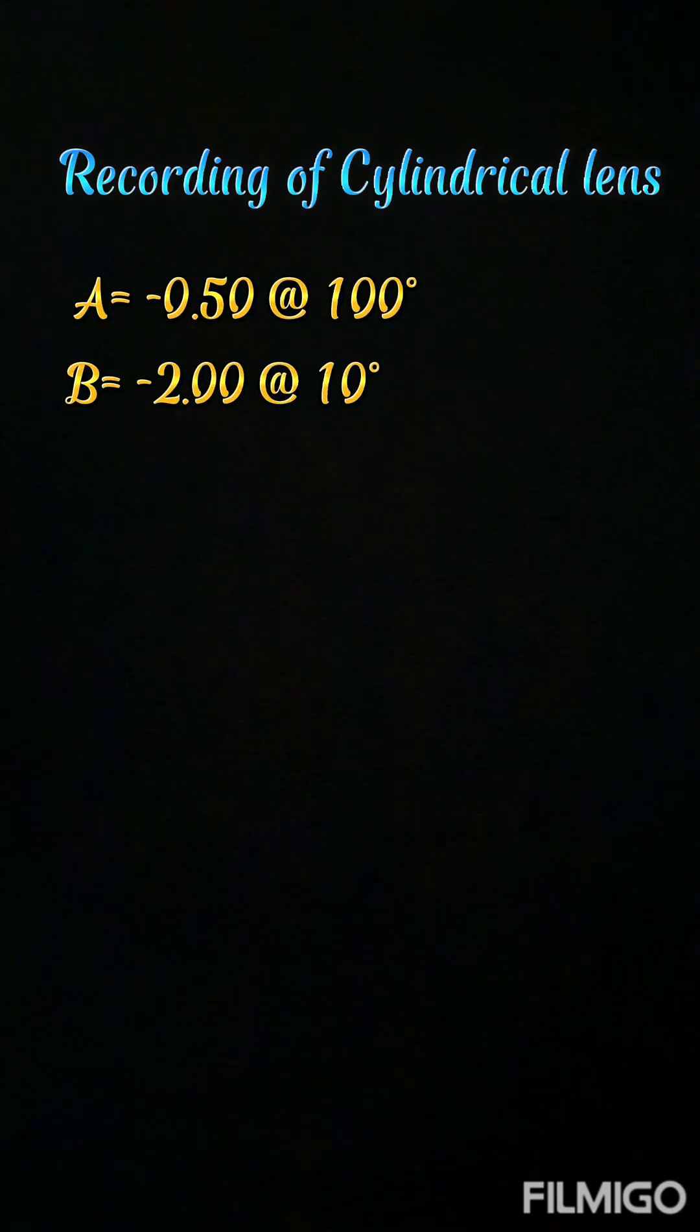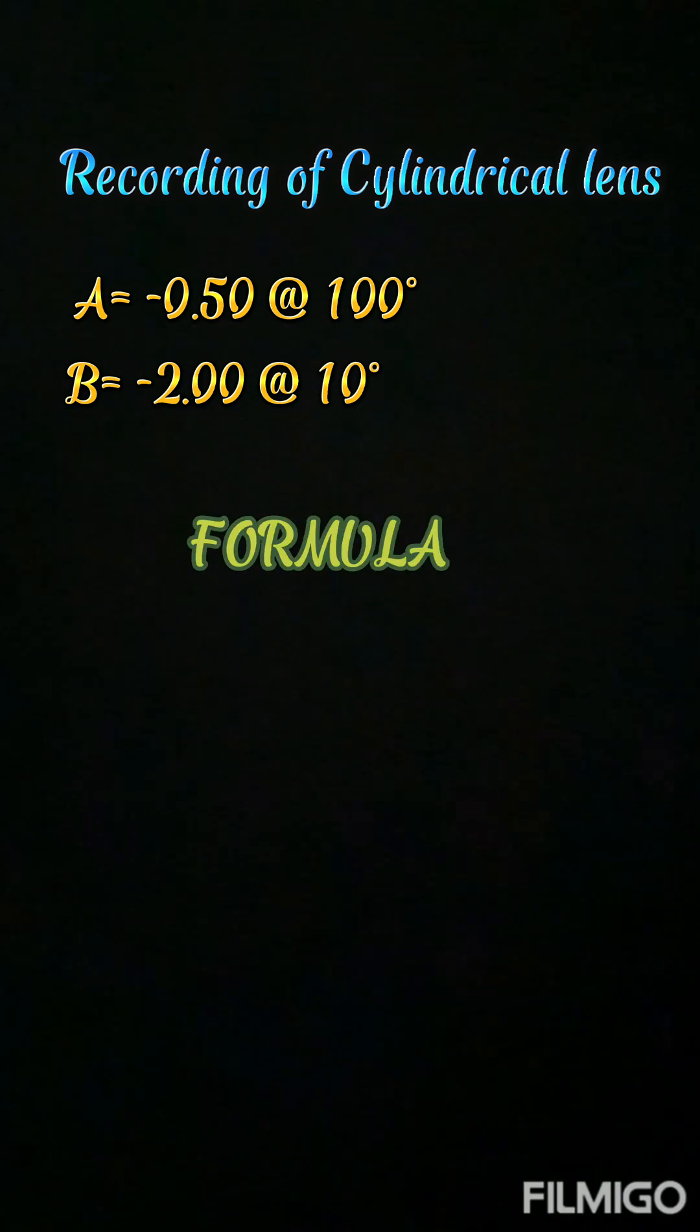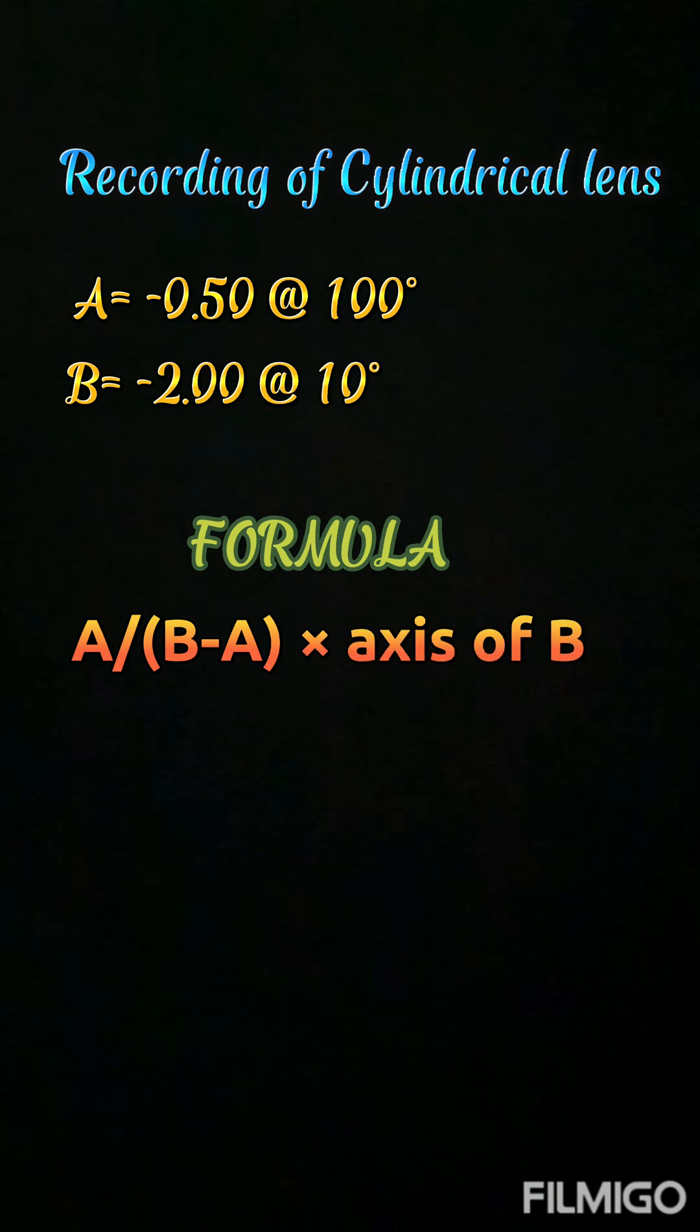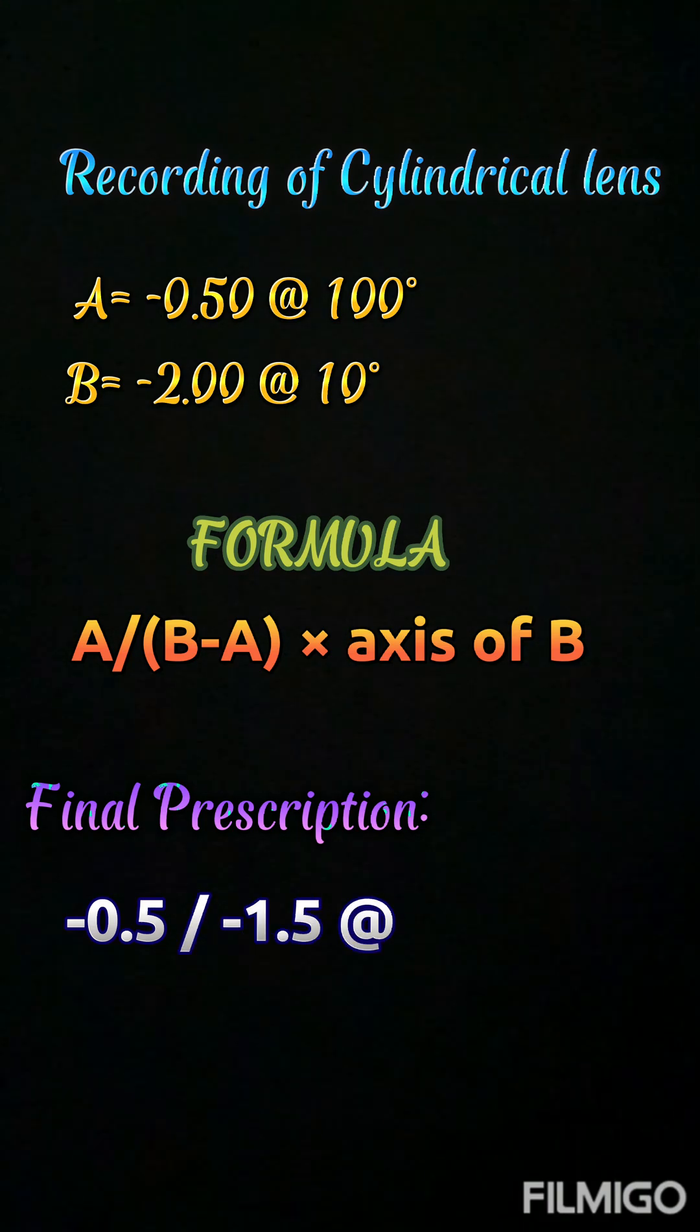Now here we have utilized the vertical meridian first, that is at 100, and then the horizontal meridian, that is at 10. So here we consider A to be minus 0.5 at 100 and B to be minus 2 at 10. By putting the formula A with B minus A across axis of B, the final prescription is minus 0.5 with minus 1.5 at 10.